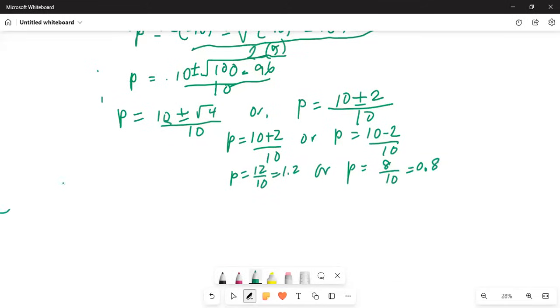The only acceptable value of p, because it's probability of success, has to be less than 1. Therefore, p is 0.8.